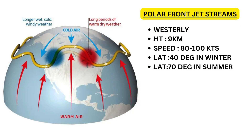Next is the polar front jet stream. These are westerly winds located at an approximate height of 9 km with wind speed of 80 to 100 knots. The ideal location is 60 degrees north and south, but with the movement of the sun, it moves to 70 degrees north in summer and 40 degrees north in winter.